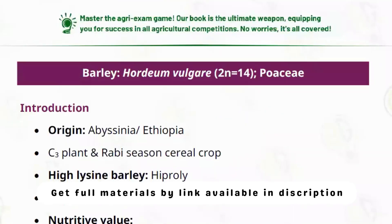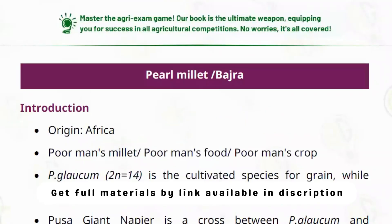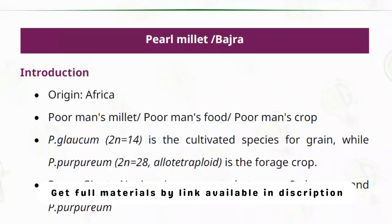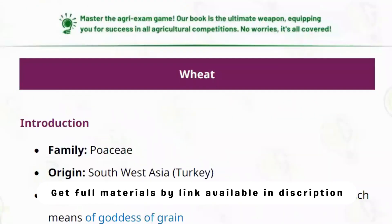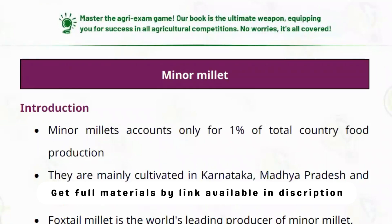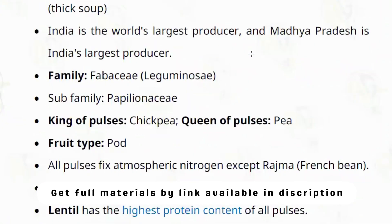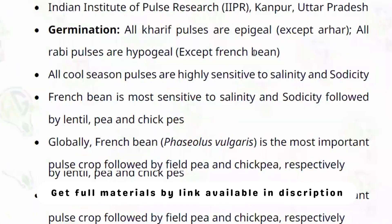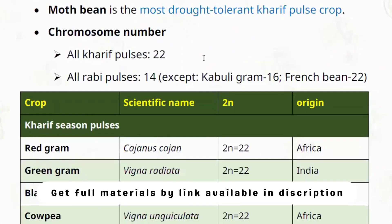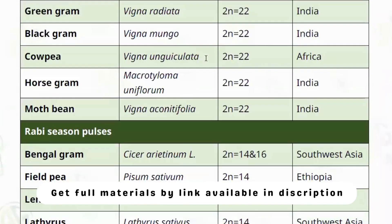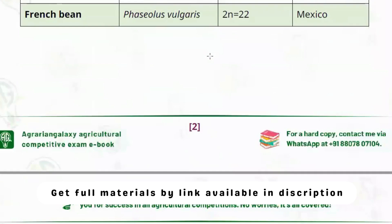Other crops covered include barley, pearl millet (bajra), wheat, and minor millets. Pulses are explained in detail — all types, kharif season pulses, and rabi season pulses.